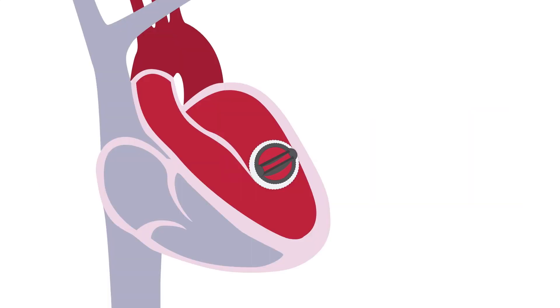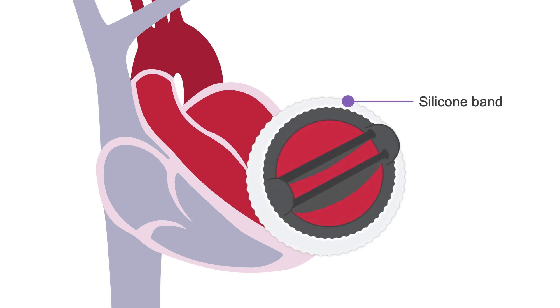The sewing ring allows the prosthesis to be secured to the patient's tissue annulus. It has a silicon band that supports tissue ingrowth to the surrounding anatomy.